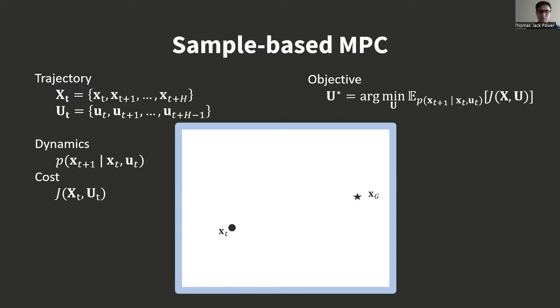Popular sample-based MPC methods iteratively update a control sequence using Gaussian perturbations. This process is only as good as the samples. If we now add obstacles, all the samples are high cost, and iteratively resampling results in us becoming stuck in a local minimum.